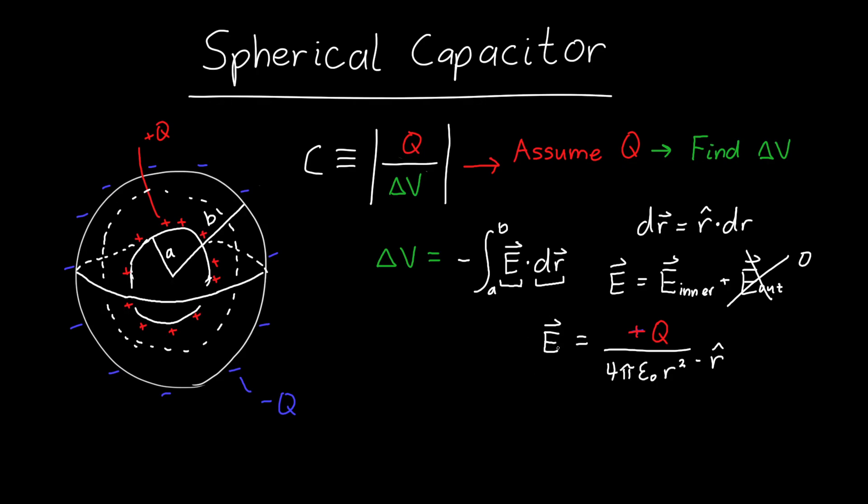Now we can take the dot product of these two. Because they're pointing in the same direction, E is pointing in the r hat direction and DR is pointing in the r hat direction, their dot product is just the product of their magnitudes. So E dot DR is just plus Q over 4π epsilon naught R squared times DR.